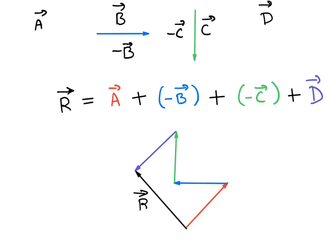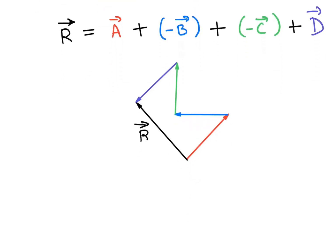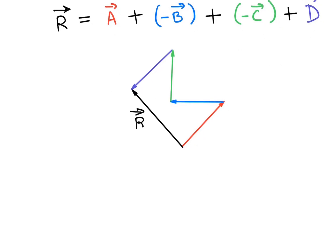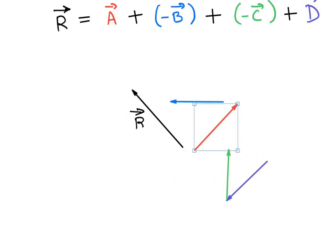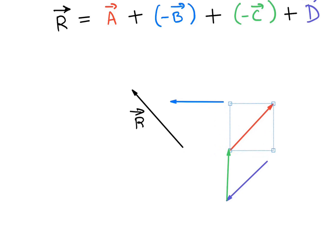We could also change the order of these vectors. For example, first take vector d, then negative c vector, then vector a, and finally negative b vector, and the resultant r vector would remain the same.